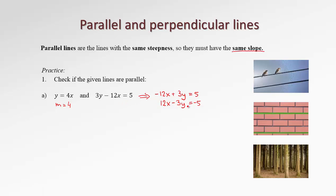Let's recall how to read slope from standard form. If the coefficient by x is called a and the coefficient by y is called b, the slope is equal to negative a over b. In our case, a over b is 12 over negative 3, which is negative 4, but we switch the sign, so it's actually positive 4. That's the same slope as the first line — therefore the two lines are parallel.